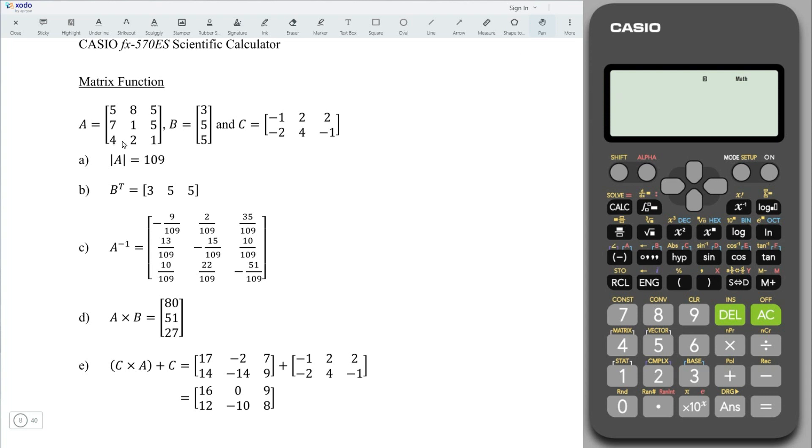Firstly, let's enter all these matrices. Press on mode, and we need the matrix function, which is 6. We have matrix A, so select 1. And matrix A has 3 rows and 3 columns, so we should have 3 by 3 matrix, which is 1.